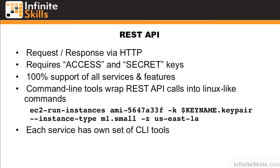Each service has its own set of CLI tools, which you can download through the AWS interface. The first three characters of each tool generally designate what it's for — EC2- is for EC2, AS- is for autoscaling, MON- is for CloudWatch, and so on and so forth.